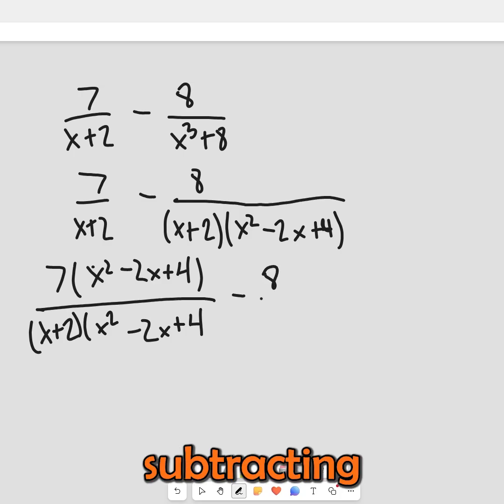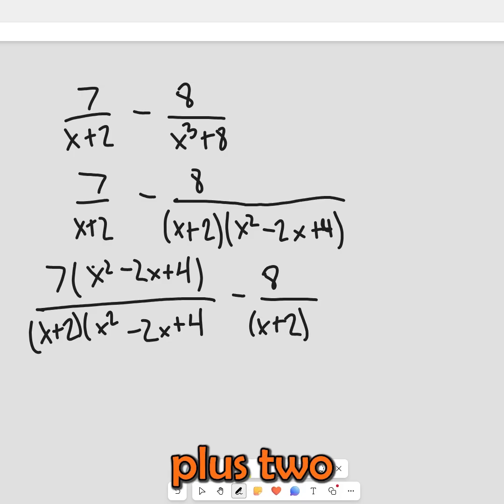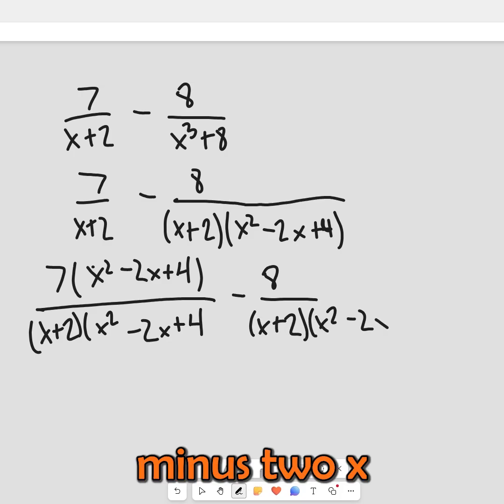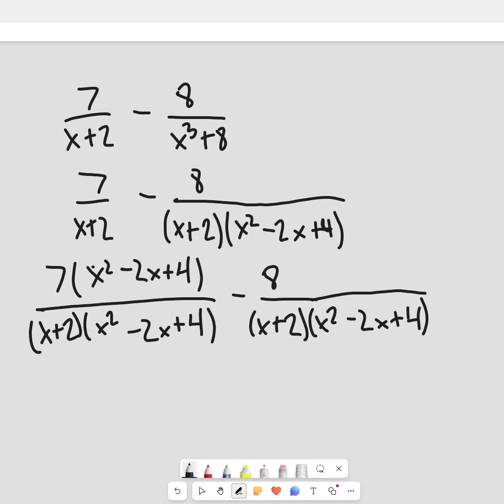We're subtracting 8 over x plus 2 times x squared minus 2x plus 4. And so now you can see they both have the same denominator. This is the lowest common denominator they can have.